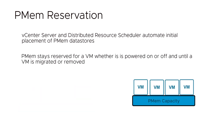Once a VM is initially powered on, PMEM is reserved for it regardless of whether it is powered on or off. This reservation ensures that the PMEM will be available for the VM when it is powered on again. The PMEM stays reserved until the VM is migrated or removed.